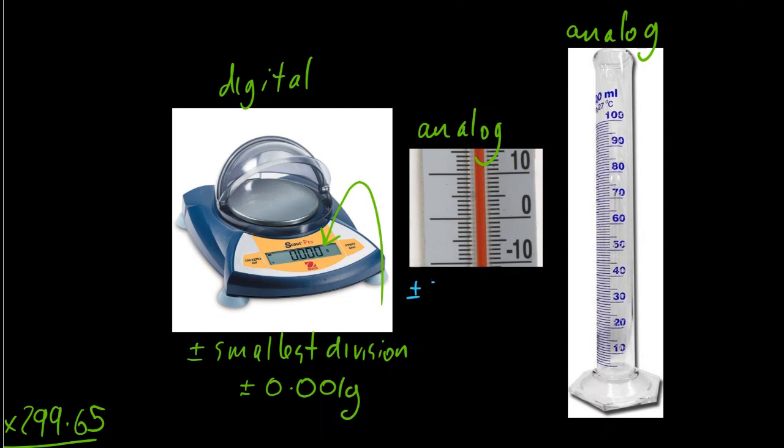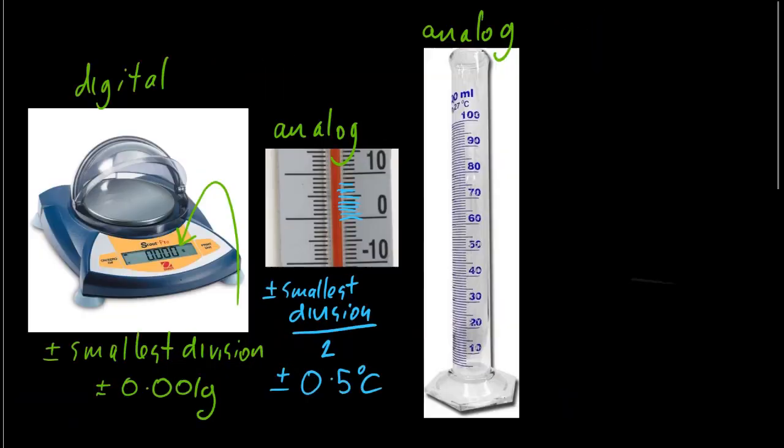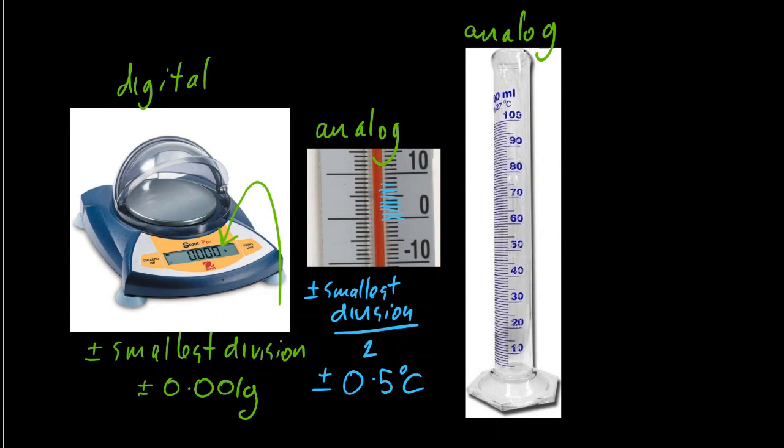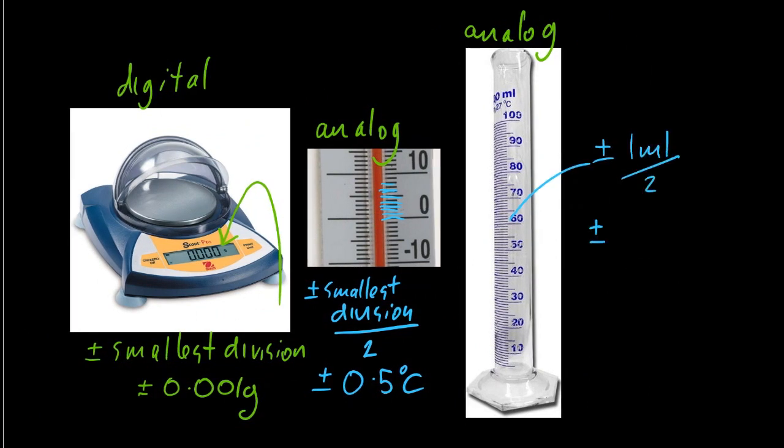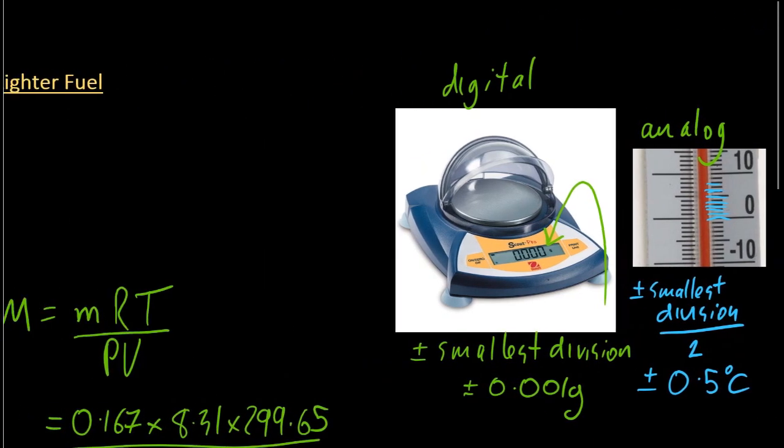But analogue is less uncertain. So the uncertainty is half of the smallest division. And you can see that the thermometer was split up into one degree small divisions. So the uncertainty is plus or minus half a degree centigrade or Kelvin. And for the measuring cylinder, it's also half a milliliter, since the smallest measurement was one milliliter.